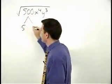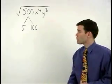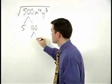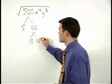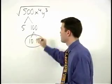500 is 5 times 100, and you should be able to recognize 100 as a perfect square. 10 times 10. So to start with, we have a pair of tens.